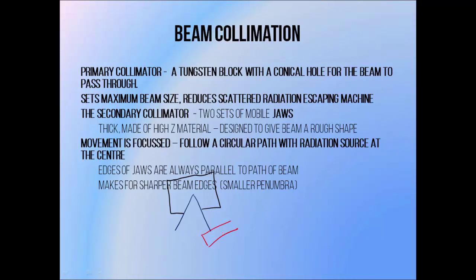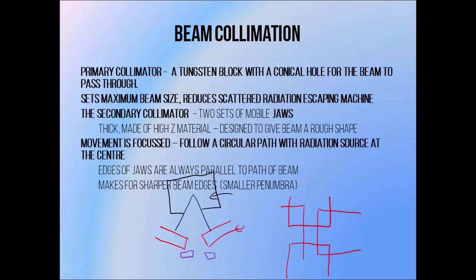Linear accelerators use three levels of beam collimation. The primary collimator is a thick tungsten block with a hole in it to let the beam out — it determines the maximum field size, and also helps stop scattered radiation from escaping the treatment head. Beneath this we have the secondary collimator, or jaws, which are four mobile rectangular radiation shields made of thick metal. They're moveable and allow us to make square and rectangular fields. A linear accelerator has two sets of jaws, one above the other, and these jaws can move independently so they can make any square or rectangular beam shape within the bounds of the maximum field size.